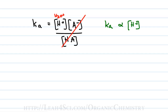The less H+ you have, the weaker your acid. So if we have a high value for Ka, that means we have a high H+ concentration, giving us a strong acid. A low value for Ka means low proton concentration, giving us a weak acid. So: high Ka is strong acid, and low Ka is weak acid.